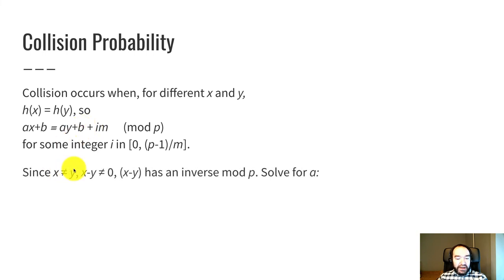Now, X is not equal to Y and that means that X minus Y is not zero. By assumption, these are different keys. And so they have a difference that's not zero.